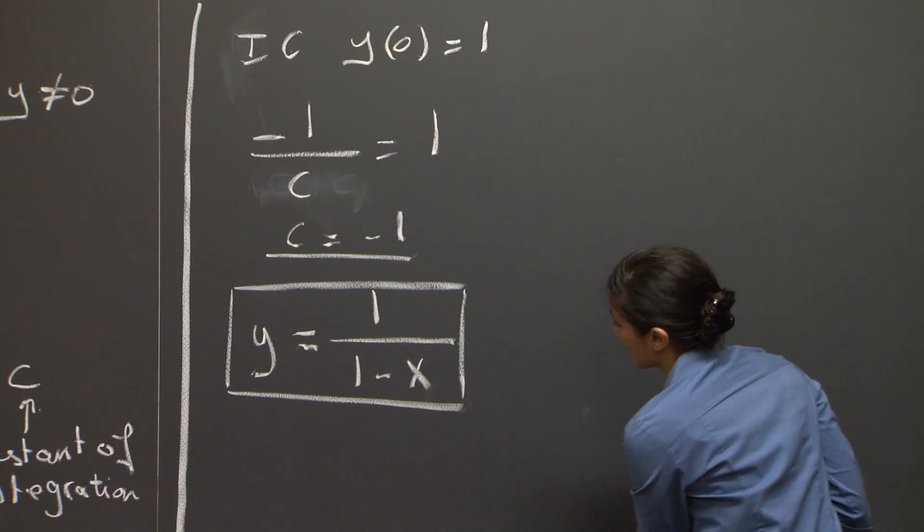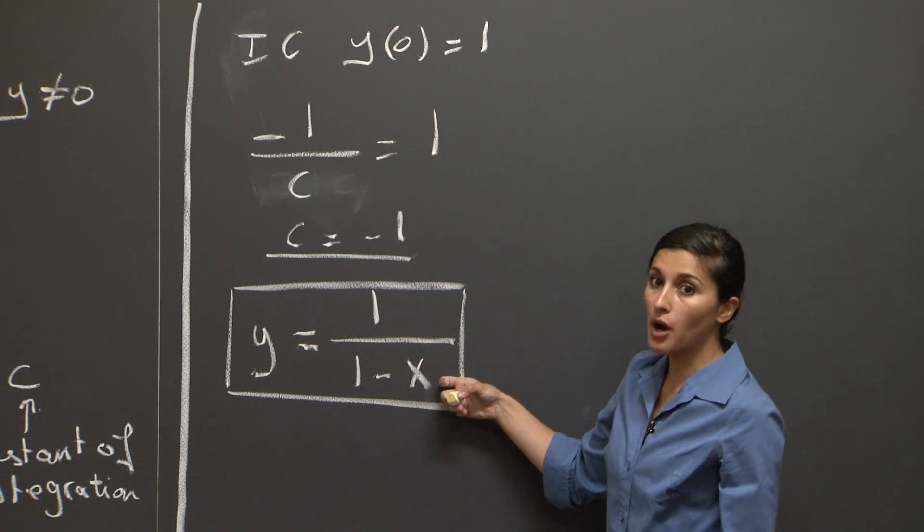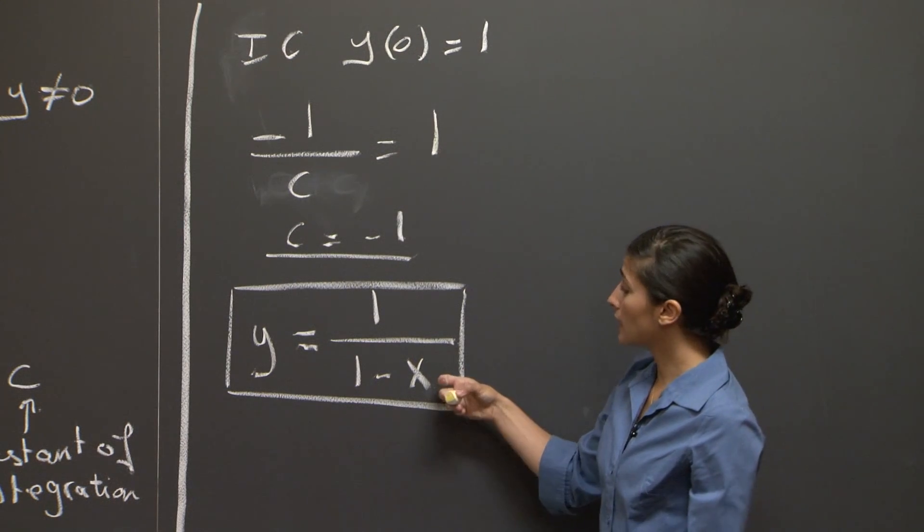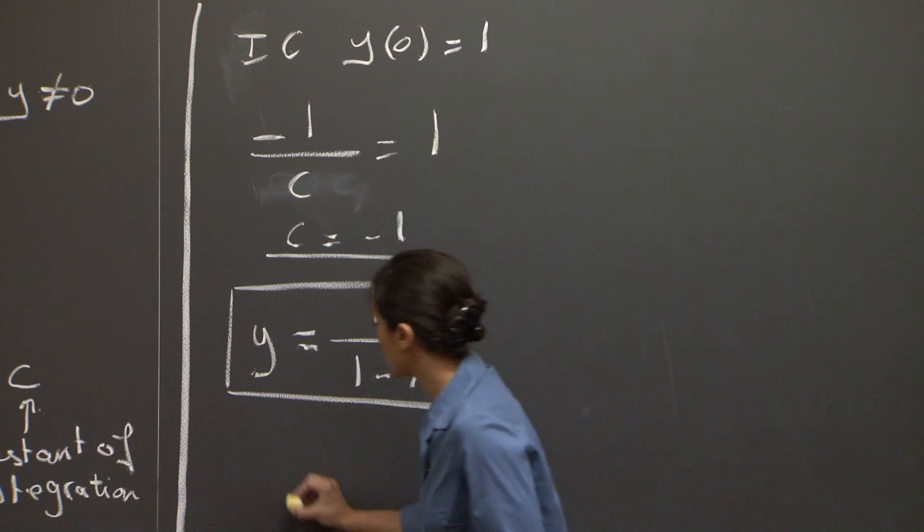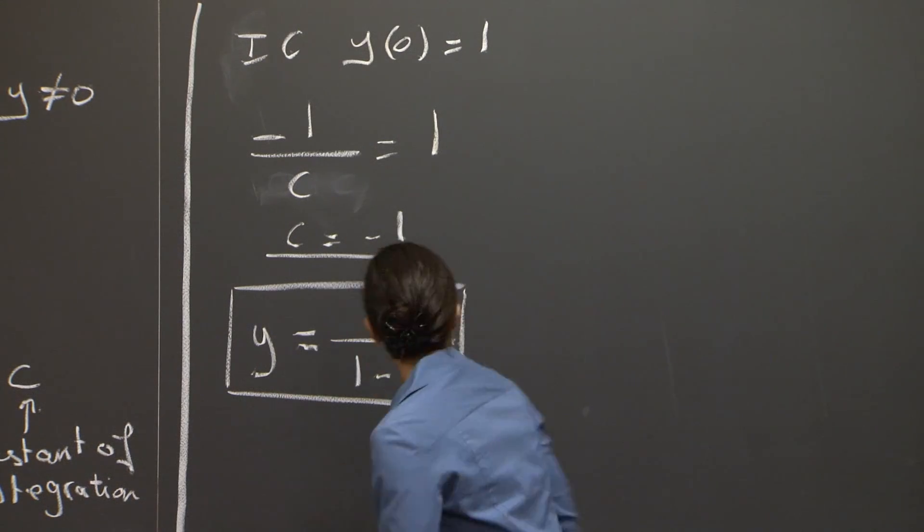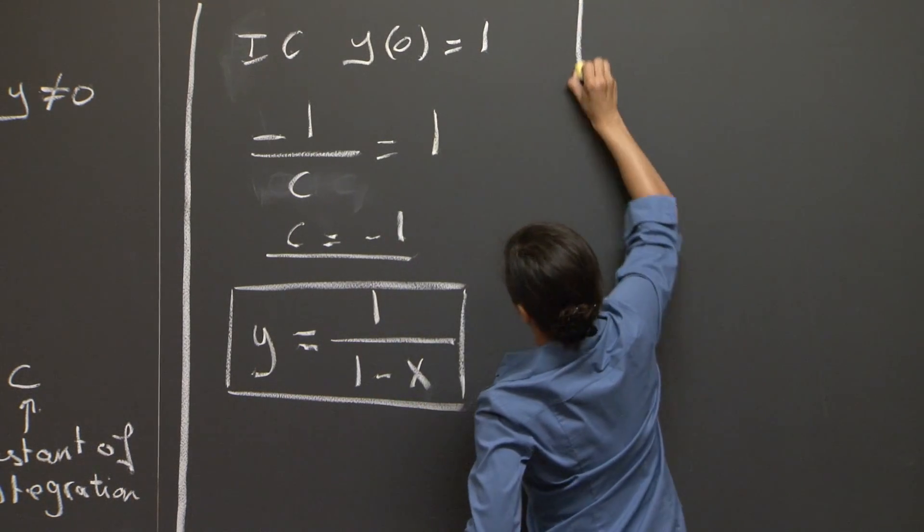If you examine this expression, you see right away that we have a problem for x equals 1. Because at x equals 1, we have 1 over 0, which means that then the solution blows up, and we have a vertical asymptote.